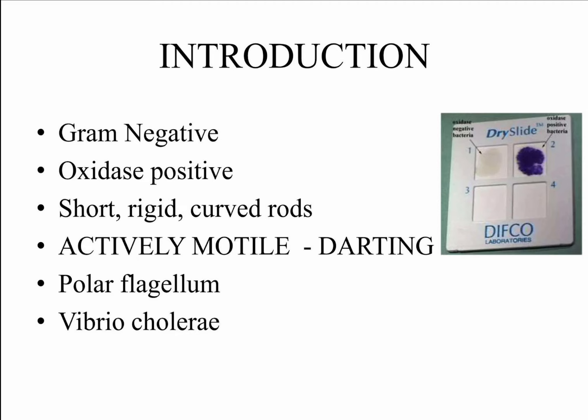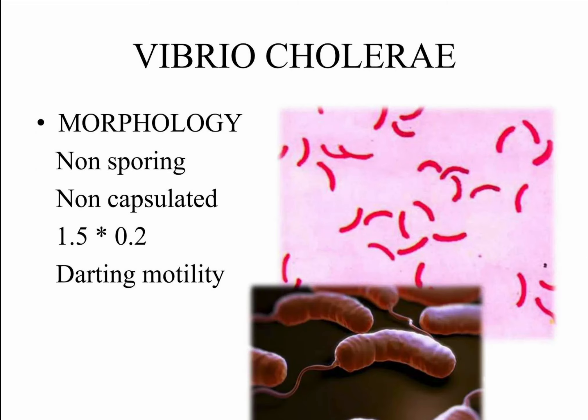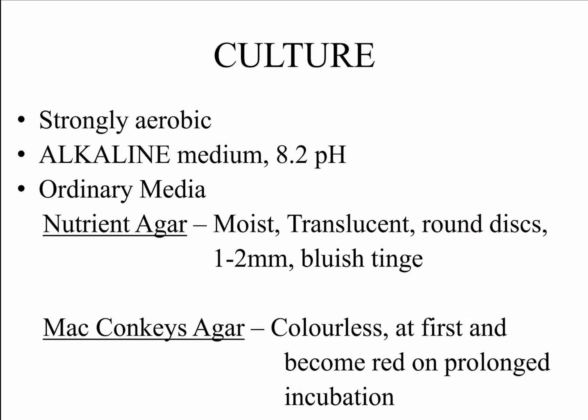One of the well-known species is Vibrio cholerae, the causative agent of cholera. Talking about the morphology of Vibrio cholerae, they are non-sporing and non-capsulated bacterium. They measure approximately 1.5 by 0.2 micrometres and show distinct darting motility under the microscope. In a pure culture, Vibrio cholerae appears as gram-negative, comma-shaped rods. Staining helps to differentiate it from other bacterial species.